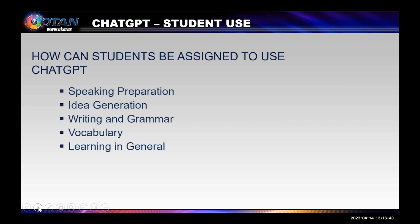Going along with the idea that human texts have errors and large language models are based on human texts, humans also have biases. Therefore, ChatGPT results may also have bias, something that is critical to be aware of when using these tools. How can students be assigned to use ChatGPT? The possibilities, just like the teacher uses, are limited only by our imaginations.